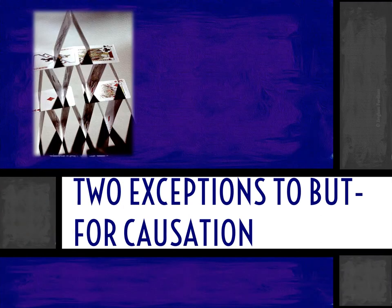The first thing you do is always attempt but-for causation. But there are some times when but-for causation doesn't give the plaintiff the result the plaintiff wants. In those situations, the plaintiff can take advantage of one of the exceptions to but-for causation.